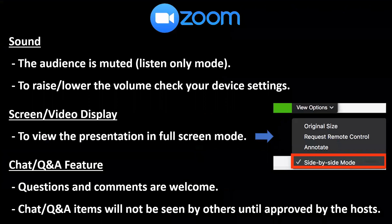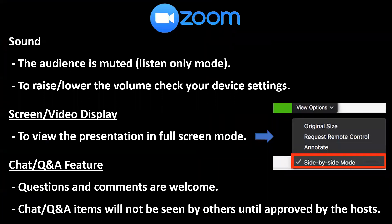If you want to adjust the screen display so that the slides take up the full screen — if there are black boxes with my name Robert Kellerman in them — you can make those go away by clicking on 'View' or 'View Options' at the top of your device, and click off the side-by-side mode.